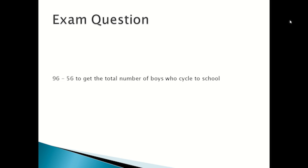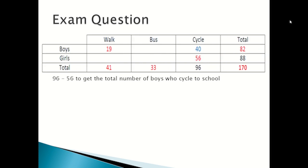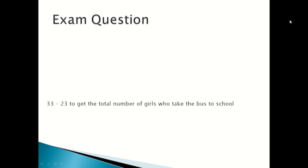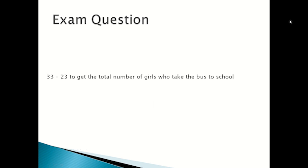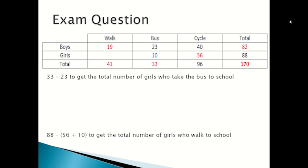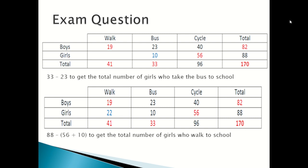Then do 96 minus 56 to get the total number of boys who cycle to school, which is 40. Then 82 minus (40 plus 19) to get the total number of boys who take the bus to school, which is 23. Then 33 minus 23 to get the total number of girls who take the bus, which is 10. Finally, 88 minus (56 plus 10) to get the total number of girls who walk to school, which is 22.